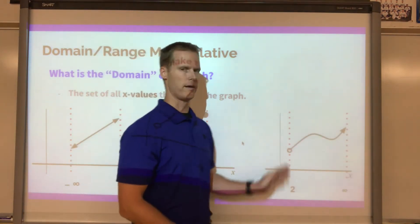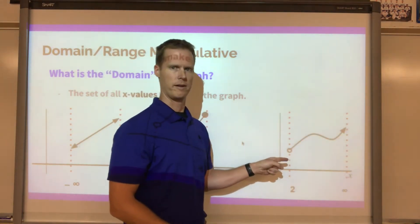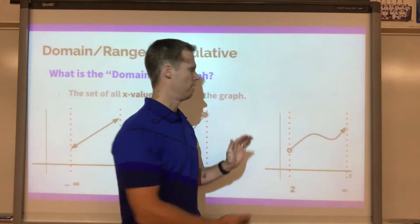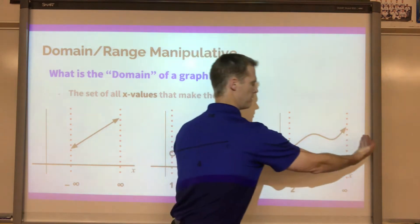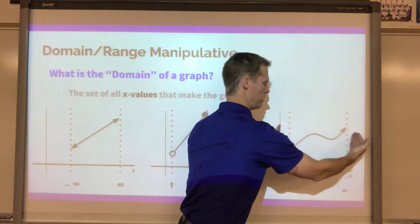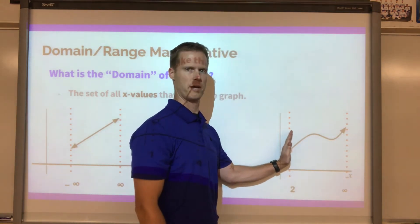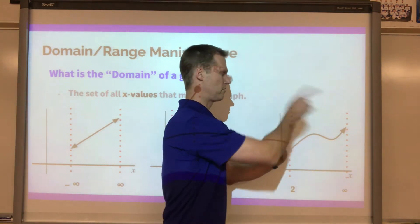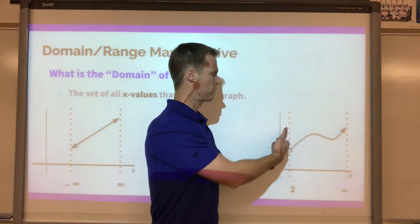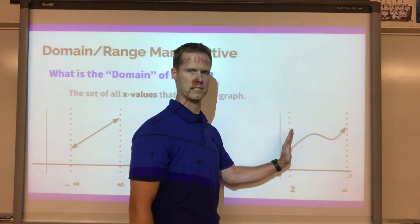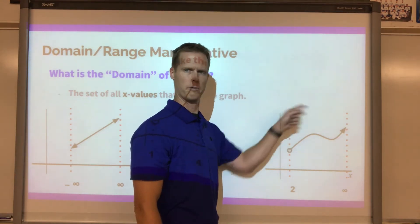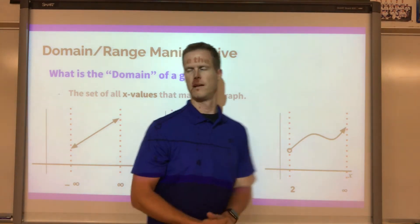Next, we have an endpoint leading to an arrow. The walls come in and one wall stops at two, while the other releases and goes off to infinity. So this graph's domain exists from two out to infinity.